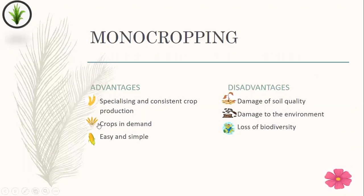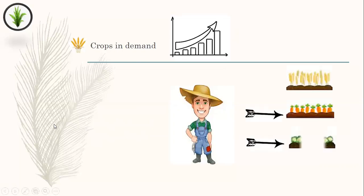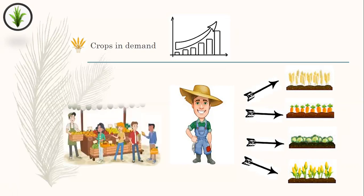Next is crop in demand. Monocropping practice can help grow crops that are popular in the market. So the farmer will evaluate the crops that are most commercially viable to grow, then choose the crop that is always in demand in the market.